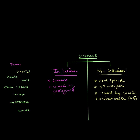COVID and malaria are both infectious because they are pathogenic and they spread like wildfire. Cystic fibrosis is a genetic disease, so it is a non-infectious disease. Cholera is a bacterial disease that spreads through water, so again, infectious.